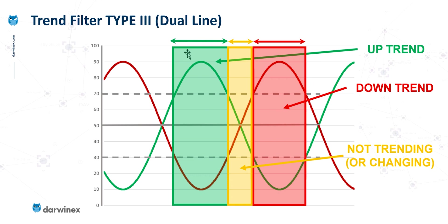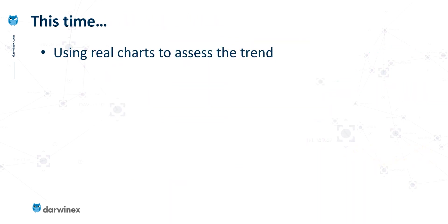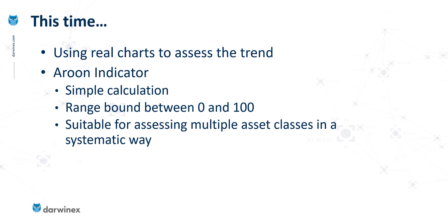In that middle region, we're not in a trend but we're not really sure what's happening. It could be a trading range, or it could be a change in direction — the underlying asset might be going directly from an uptrend to a downtrend state and it's in that transitory period. In a moment we're going to look at this indicator on some real charts, but first a bit more information about the Aroon indicator.